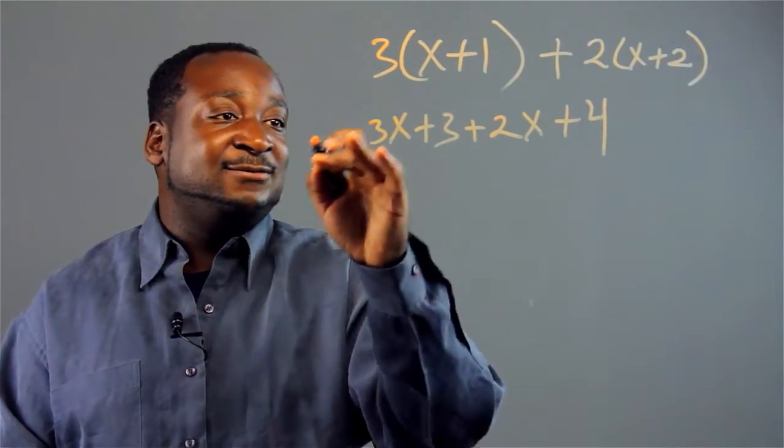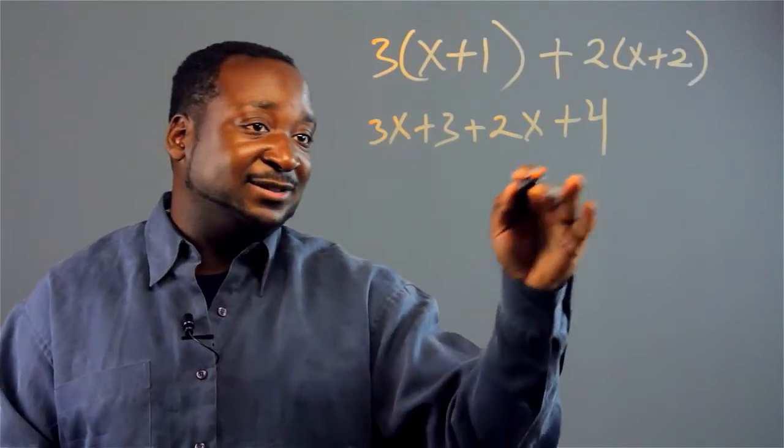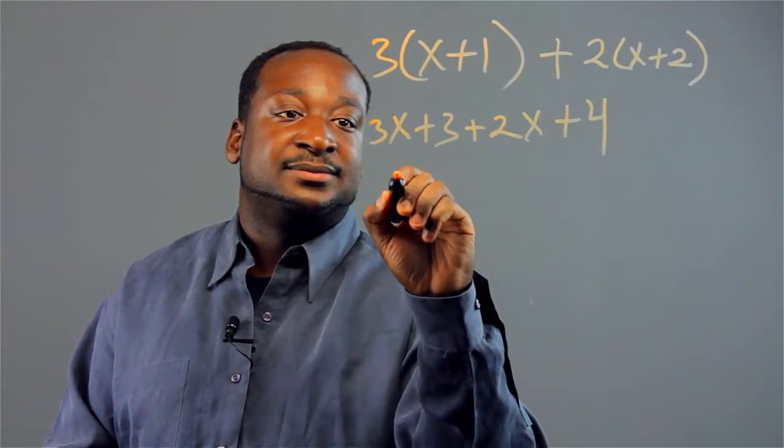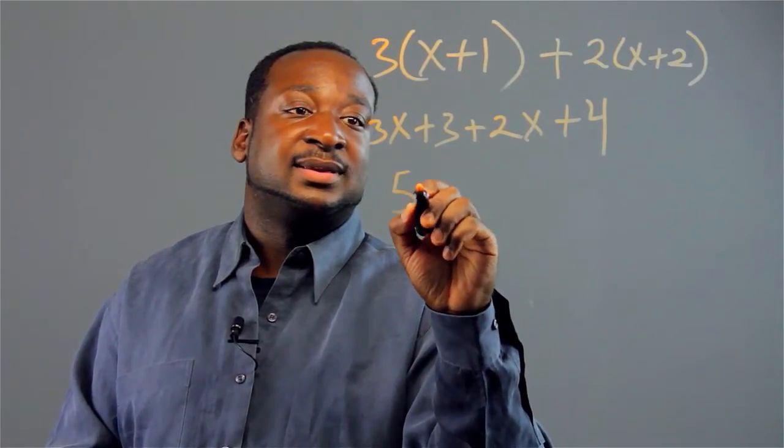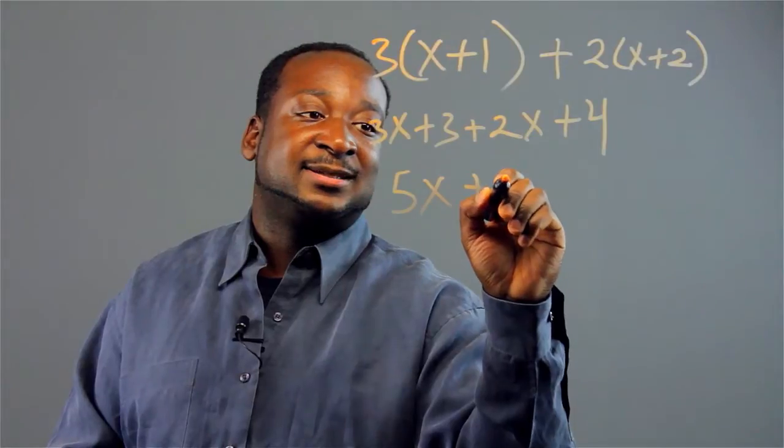Good. Now that we've eliminated our brackets, we can now simplify. 5x plus 7.